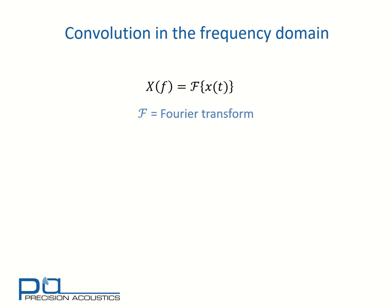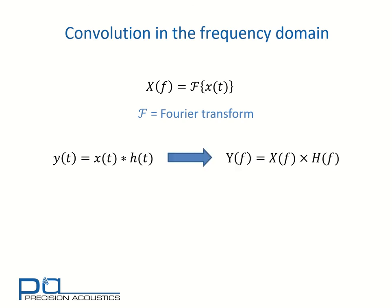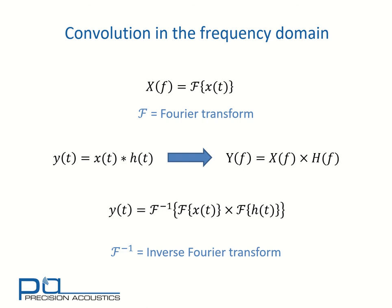Convolution is often expressed in the frequency domain. Using a capital letter to indicate a Fourier-transformed variable, we find that the time-domain convolution integral becomes simply a multiplication of spectra in the frequency domain. Therefore, we could conduct the convolution operation by Fourier transforming each of our input and system functions, multiplying those spectra together, and then inverse transforming to achieve the result.